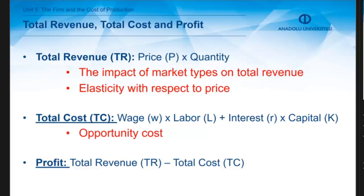The type of market has an important role on total revenue. In a competitive market, the price is given from the firm's perspective and total revenue increases with both price and quantity. In a less competitive market, the quantity demanded and the price affect each other inversely, so elasticity with respect to price is the key factor in total revenue.